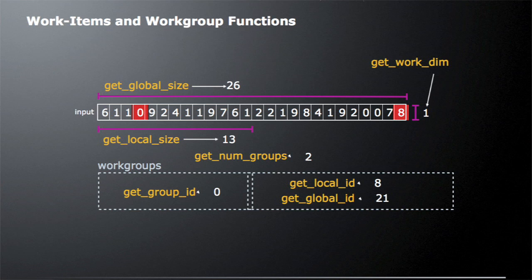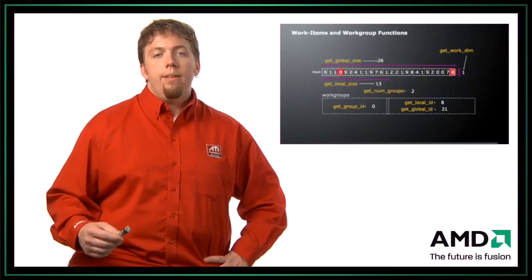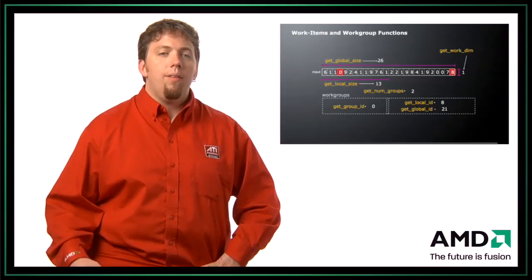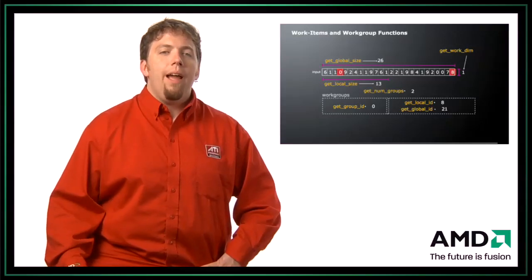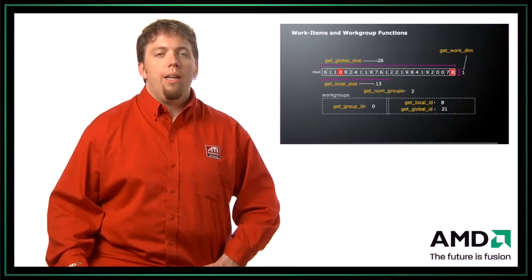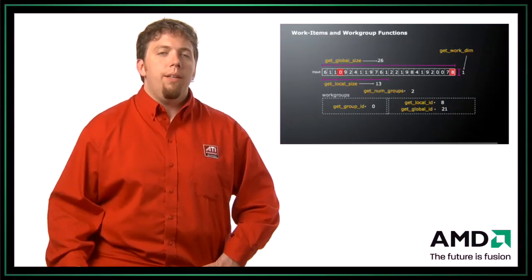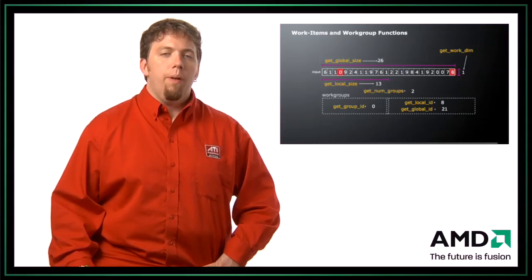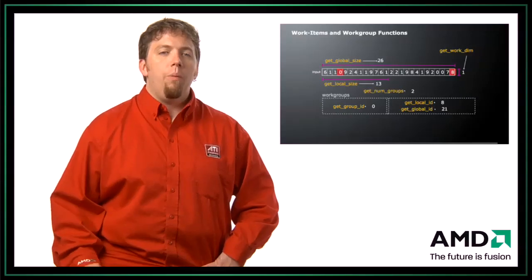For a different highlighted work item, if we called getLocalID, the local ID is eight. If we called getGlobalID, that would give us a global ID of 21. At first this might seem strange having two addresses, but because we have a global size and a local size, we need an address in the global space and in the local space. By using this local address, we can actually use our local memory to share data between work items in the same work group. But remember — you cannot share data in local memory between work groups; it's only within a work group.